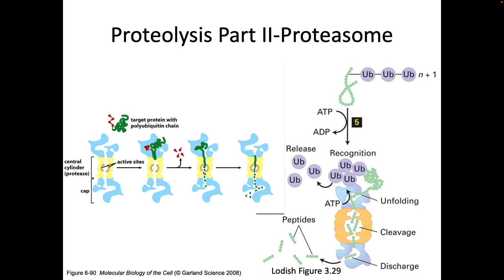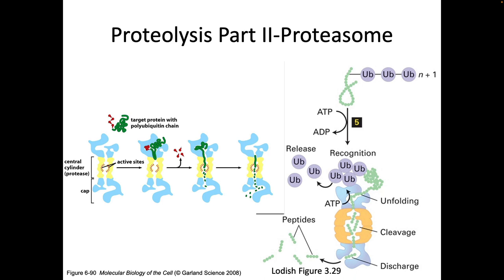The caps on the end will recognize the ubiquitin, take off the ubiquitin so it can be recycled, and then the peptide gets threaded through the proteasome and cut up into peptides. You can see this process from two different versions of two different textbooks here. This is how we do proteolysis normally in the cell for cytoplasmic proteins — but it's also going to be the way that we make the peptides for MHC class 1.